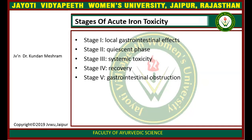The stages of acute iron toxicity include five stages: Stage 1, local gastrointestinal effects; Stage 2, quiescent phase; Stage 3, systemic toxicity; Stage 4, recovery phase; and Stage 5, gastrointestinal obstruction.